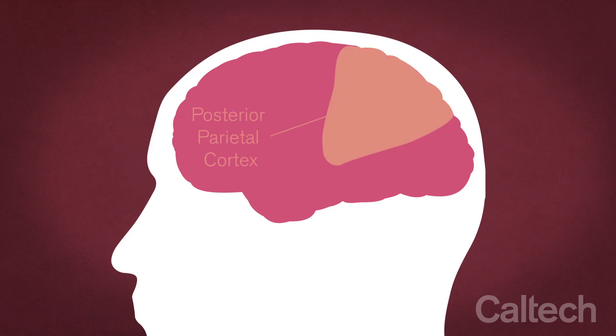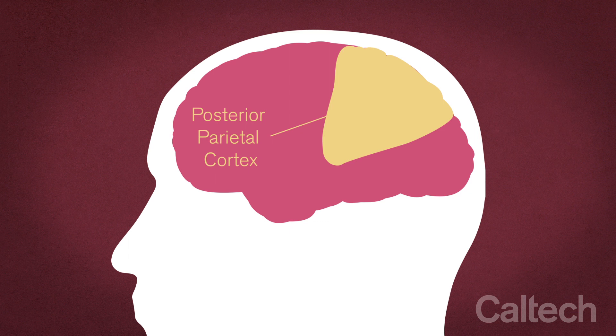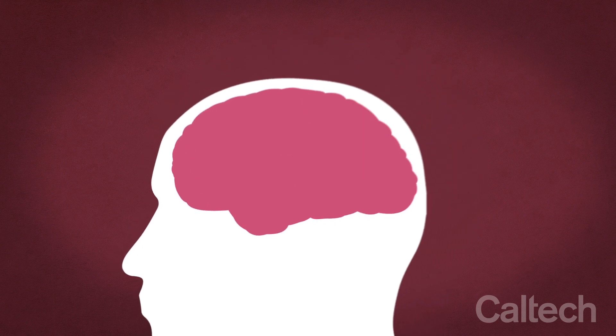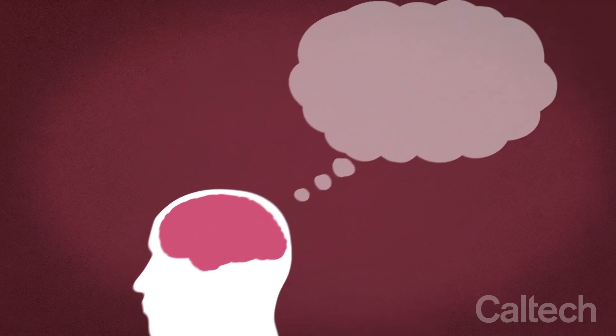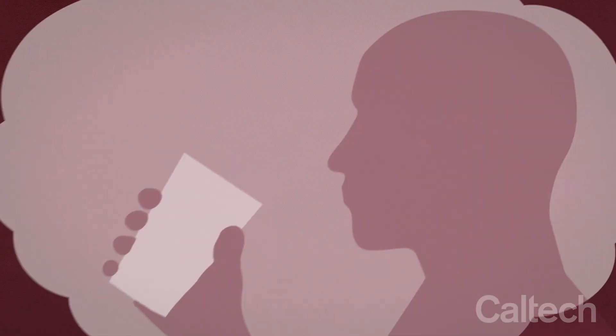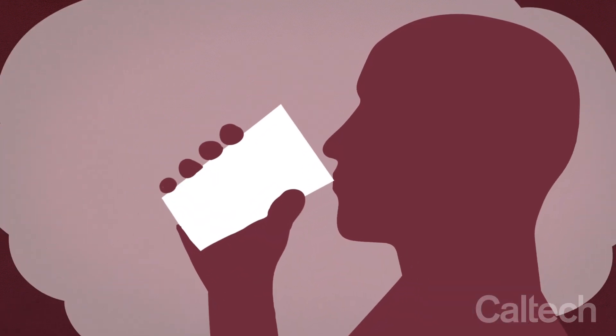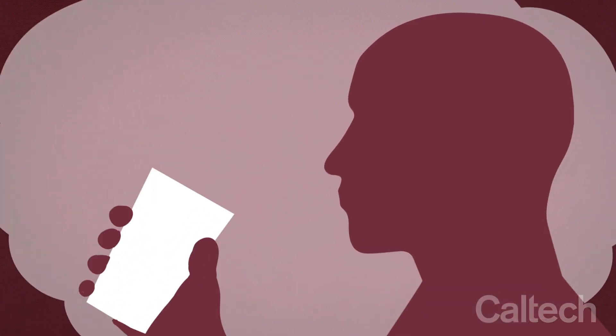So they turned their attention to the posterior parietal cortex or PPC, the region of the brain involved in movement planning rather than movement execution—what you intend to do rather than all the steps it takes for you to do it.